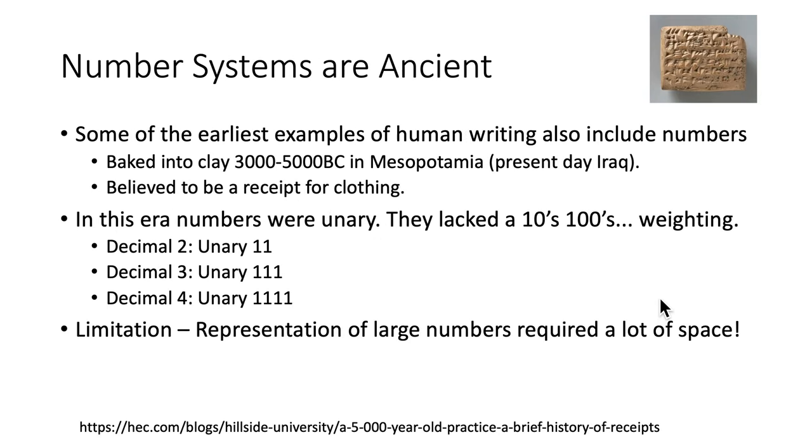Now, number systems are ancient. This picture here in the upper right is an example of some of the earliest examples of human writing, and it also includes numbers. Here it was baked into clay, sometime around 3000 to 5000 BC in Mesopotamia, which is present-day Iraq. This is believed to be a receipt for clothing.